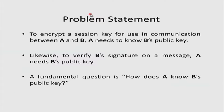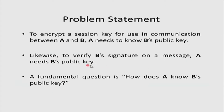The problem statement: to encrypt a session key for use in communication between A and B, A needs to know B's public key. Likewise, to verify B's signature on a message, A needs B's public key. So you need somebody else's public key for at least two reasons — possibly three. First, to encrypt a session key to send using his public key. Second, to verify his signature on a message. Third, for authentication.